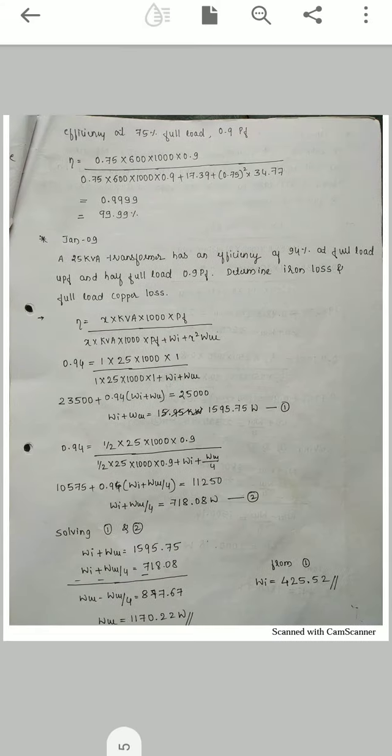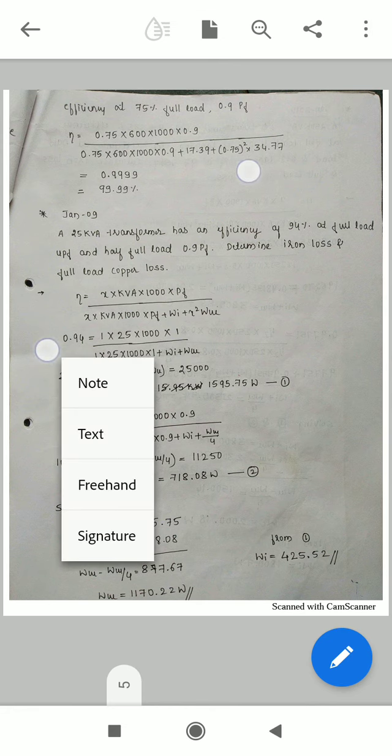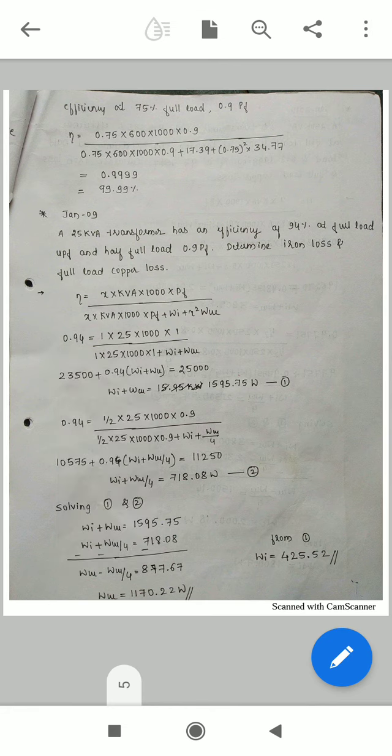Next, for the given 75%, we take x equals 0.75, with 600 kVA and 0.9 power factor. Using the iron loss and copper loss we calculated, we substitute here and do the calculation to get the efficiency.